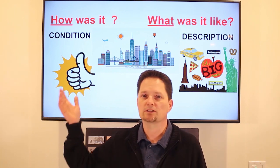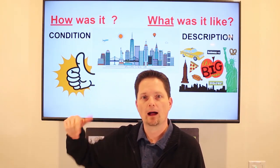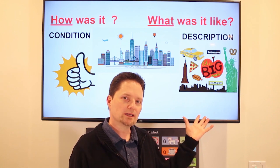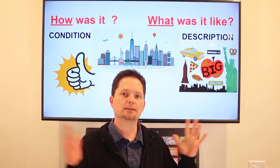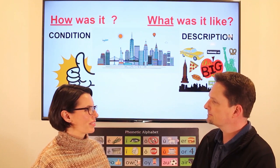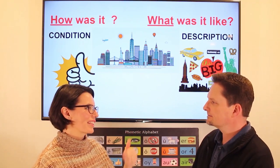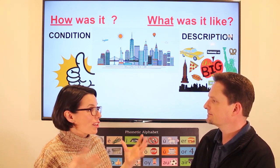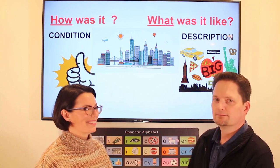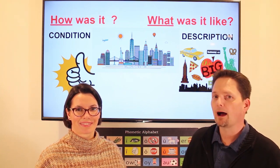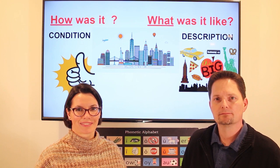You're talking about a vacation. 'How was it?' is a question for condition — good or bad only. But for more information, use a question for description: 'What was it like?' For example: I went to New York. How was it? It was great. What was it like? We had a lot of fun. The buildings are huge. The food is great.